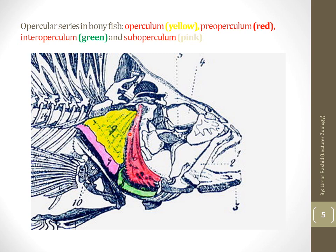The sub-operculum, shown in pink, is rectangular in shape in most bony fishes and is located ventral to the pre-operculum, as visible in the diagram.